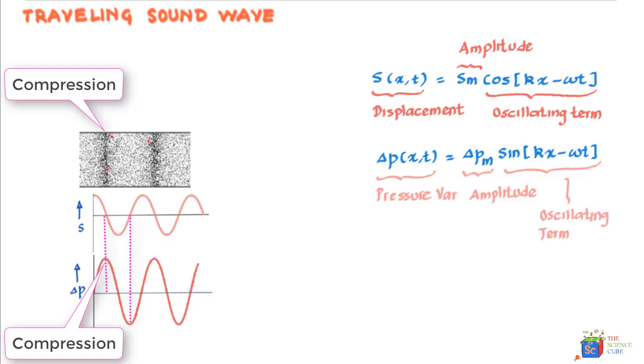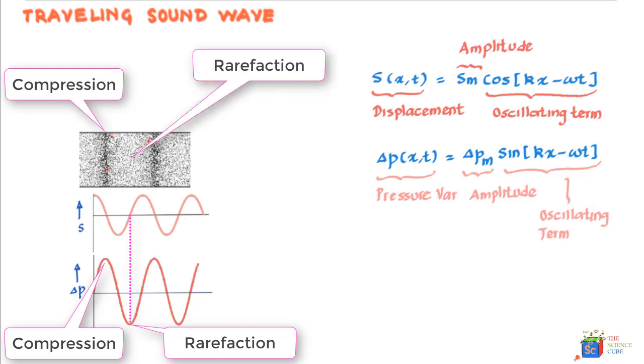And a minima indicates a negative pressure or a rarefaction. And if you were to zoom into such regions, you will see particles are far away from each other and not creating enough collisions.